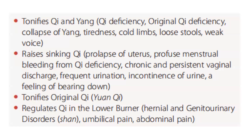REN6 to summarize: tonifies qi and yang — so for qi deficiency, original qi deficiency, yang collapse, tiredness, cold limbs, loose stools, weak voice. REN6 raises sinking qi — good for uterine prolapse, profuse menstrual bleeding from qi deficiency, chronic and persistent vaginal discharge, frequent urination, incontinence of urine, and feeling of bearing down. REN6 tonifies original qi and regulates qi in the lower burner for hernia and genitourinary disorders, umbilical pain, and abdominal pain.